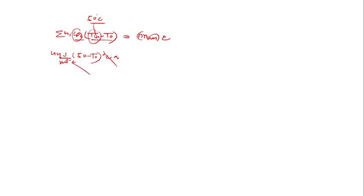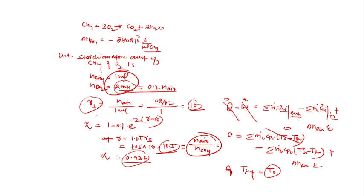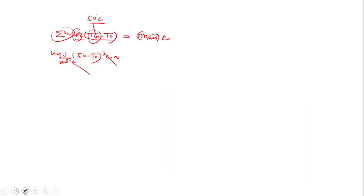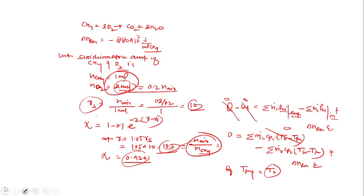The total moles at inlet: 10.5 moles of air (oxygen + nitrogen) plus 1 mole of methane = 11.5 moles total. The heat of reaction is −880×10³ J/mol, and the extent of reaction equals moles of methane reacted = 0.936.